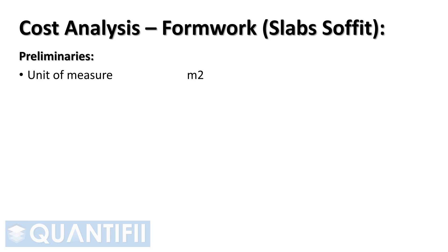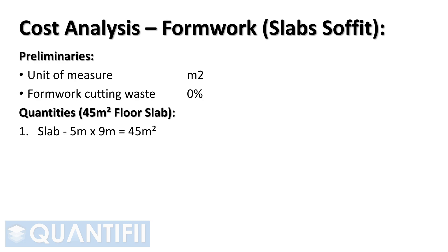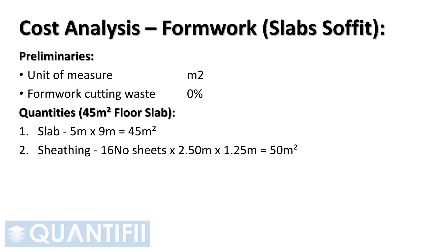Using the preceding information and assumptions, we are equipped to price slab soffit formwork. Preliminaries: unit of measure is square meters; no cutting waste allowed. Slab: 5 m × 9 m = 45 m². Sheathing: 16 sheets covering 50 m². Girders 5.4 m long run along the slab length — 5 m ÷ 1.2 m centers + 1 = 6 girders. Joists 6.6 m long run along the width — 9 m ÷ 600 mm centers + 1 = 16 joists × 6.6 m = 105.6 m total.